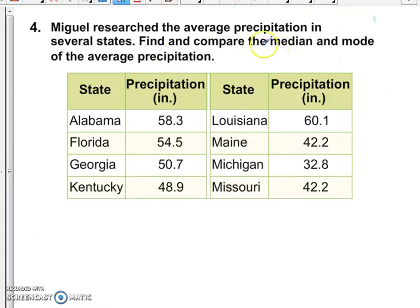Here we have Miguel researching the average precipitation in several states. Find and compare the median and mode of the average precipitation. Let's do the mode first because I think the mode could be easiest to do before you start working on the median.